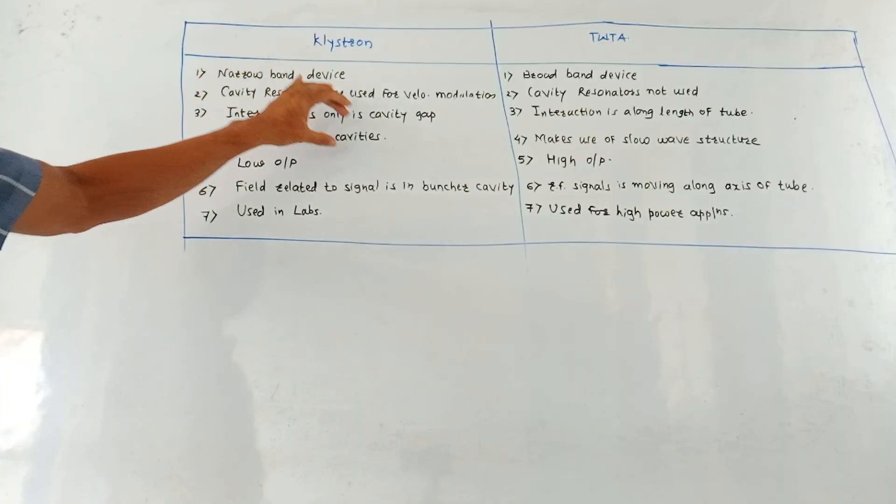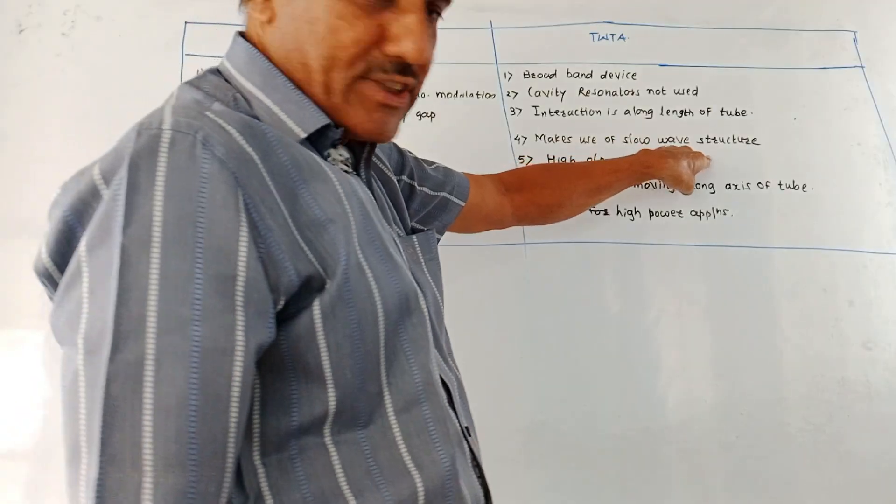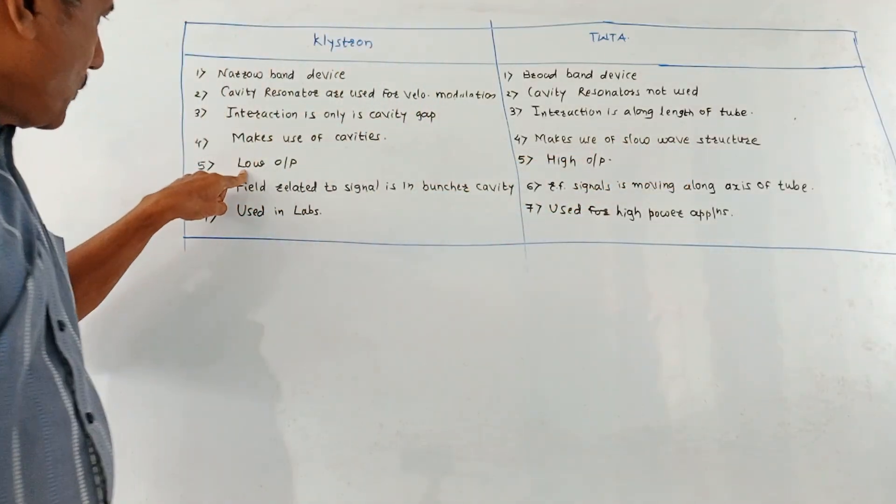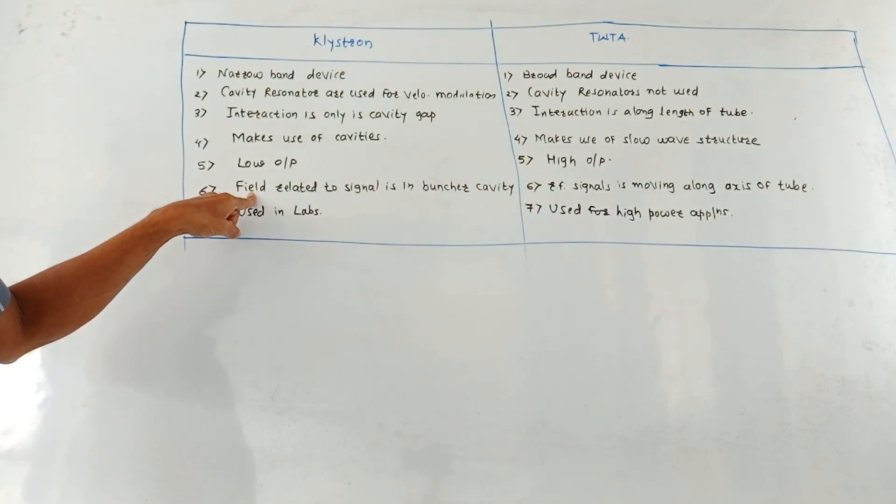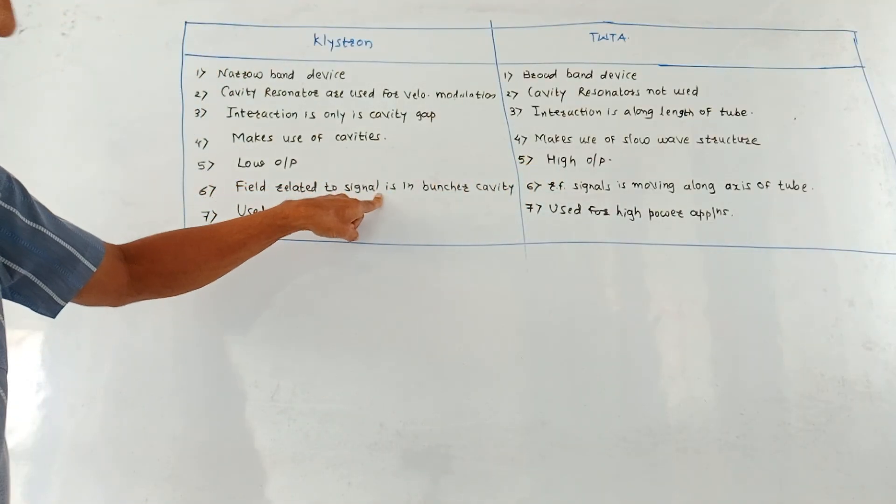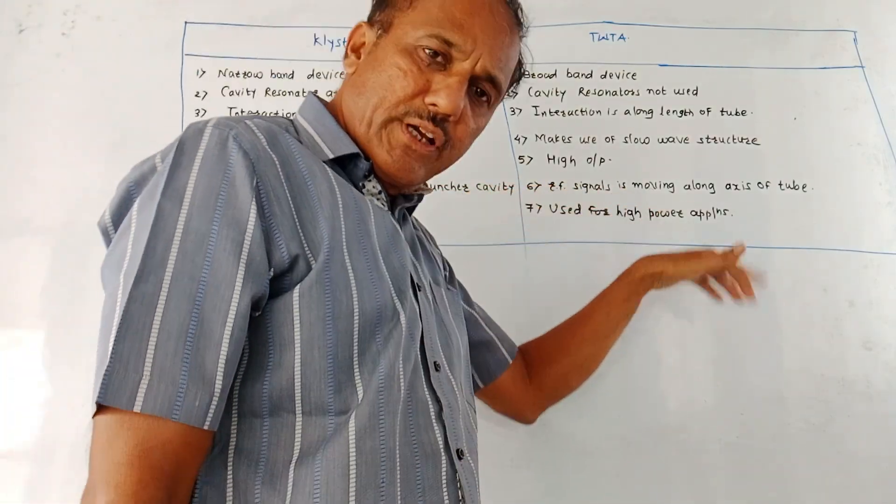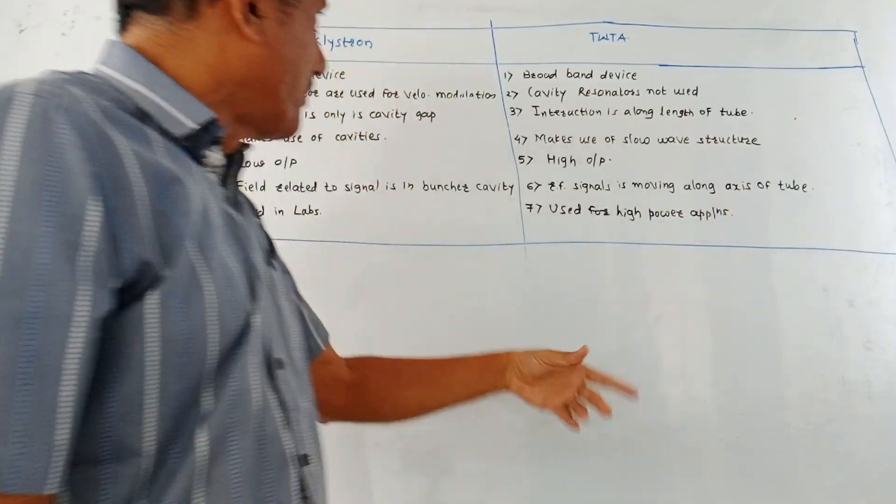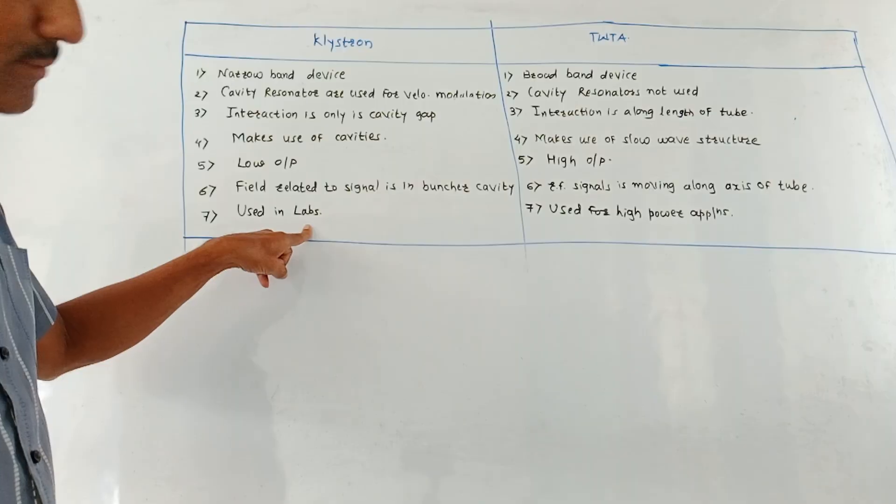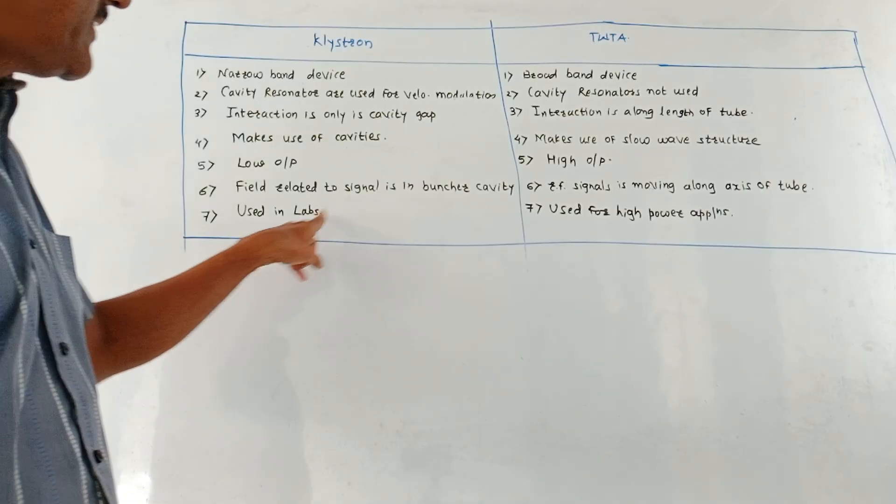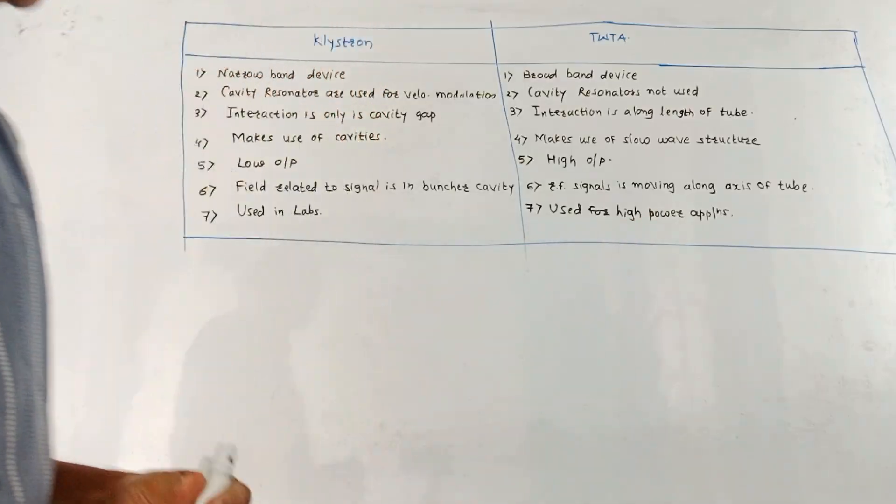Then klystron makes use of cavities. In this case, slow wave structures are used. Output power is low. In this case, high output is generated. Next parameter is field related to signal is in the buncher cavity in case of a klystron, whereas RF signal is moving along the entire axis of the tube in TWTA. Klystrons are mainly used in laboratory purposes for experiments, whereas TWTA is used for high power applications like radar.